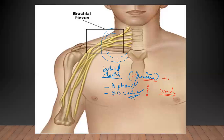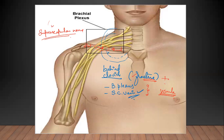The clavicle usually gets fractured at the junction of the medial two-thirds and lateral one-third, where there is a twist — the medial part is round and the lateral part is flat. Sometimes a nerve can pierce through the bone — the suprascapular nerve. If the suprascapular nerve is damaged, the supraspinatus muscle will not work, which is the initial abductor of the arm from 0 to 15 degrees.